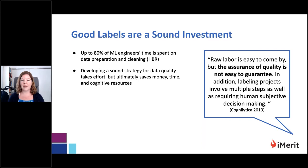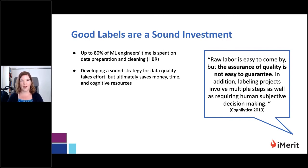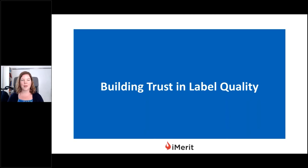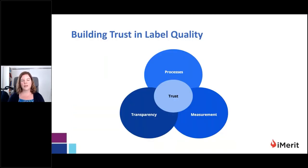The assurance of quality is not easy to guarantee. Labeling projects involve multiple steps, are very complex, and require some subjective decision-making. It's important to consider carefully your approach to building trust in your labeled dataset, otherwise you'll be trapped in an endless ground truth grind of manually reviewing things and iterating without a concrete process in place. We suggest there are three primary considerations: transparency, processes, and having a carefully considered approach to measuring quality for long-term stability.